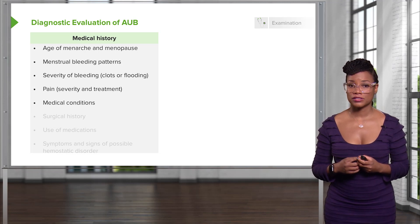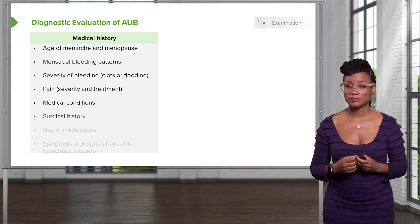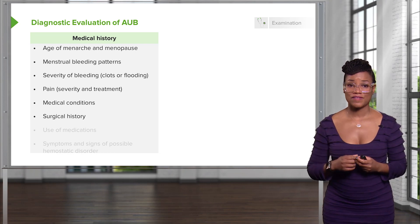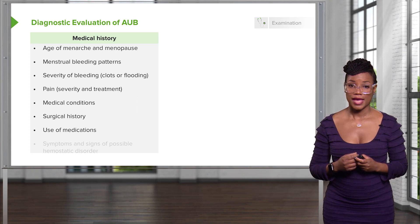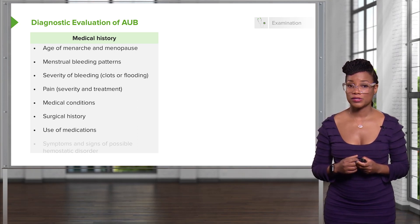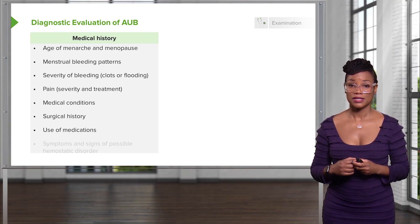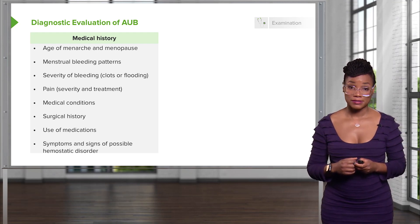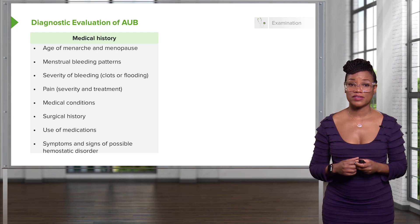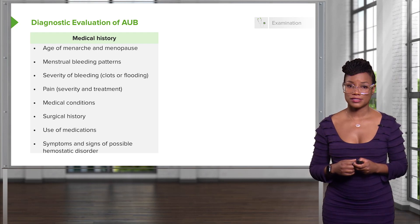Then you want to ask them about medical conditions. Do they have hypothyroidism? Are they on any medications that could thin their blood? Then you want to ask about surgical history — specifically if they've had any bleeding after surgery or post-operatively. Ask them about any medications they could be using, as sometimes patients are treating themselves with things that can actually increase bleeding, such as certain non-FDA approved medicinals and supplements. Then you want to ask them if they have any signs and symptoms of a possible hemostatic disorder, such as von Willebrand disease.